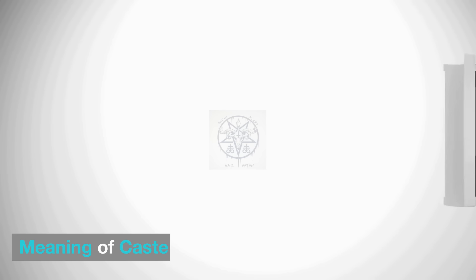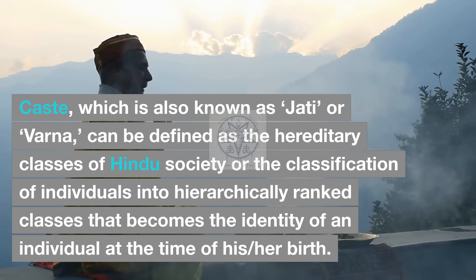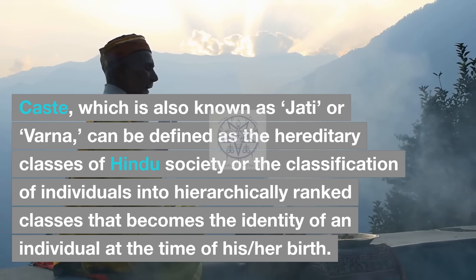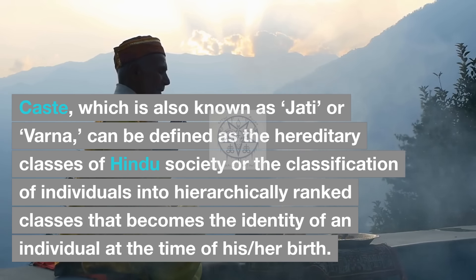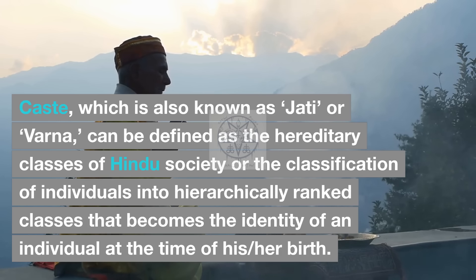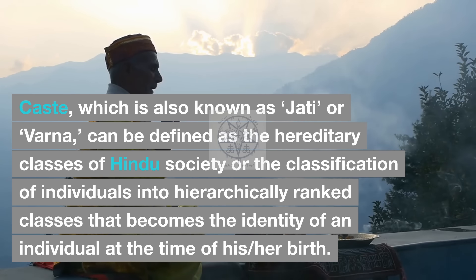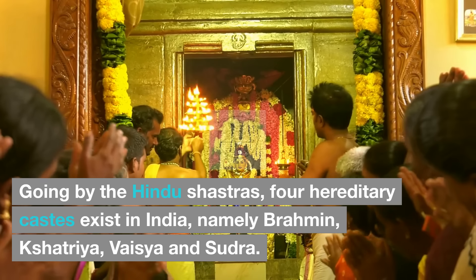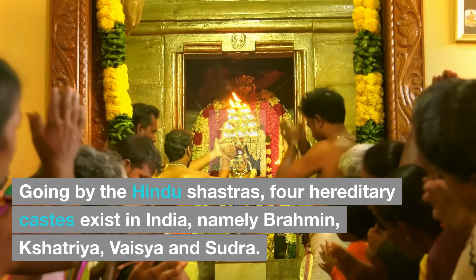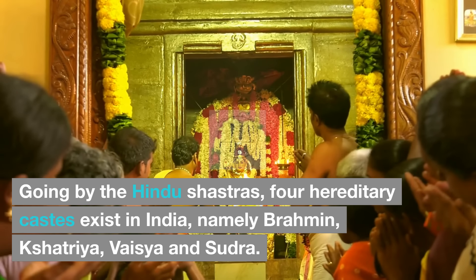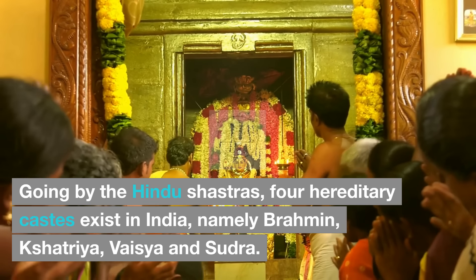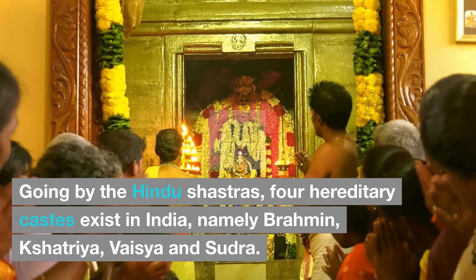Meaning of caste. Caste, which is also known as jati or varna, can be defined as the hereditary classes of Hindu society, or the classification of individuals into hierarchically ranked classes that becomes the identity of an individual at the time of their birth. Going by the Hindu Shastras, four hereditary castes exist in India: namely Brahman, Kshatriya, Vaishya, and Sudra.